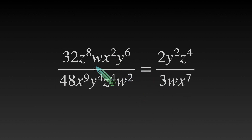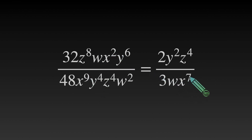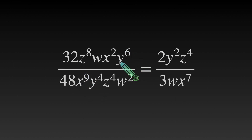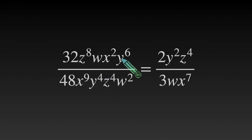Now we have x squared and x to the 9th. 9 minus 2, we have x to the 7th power at the bottom because we had more x's there. And then finally our y's: y to the 6th and y to the 4th. We have two additional y's at the top, which is why you have a y squared in the numerator of your answer.